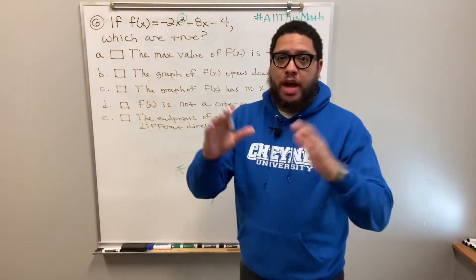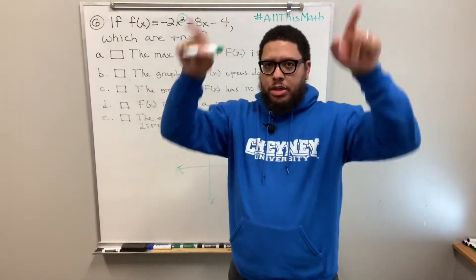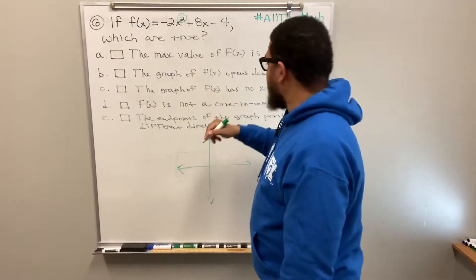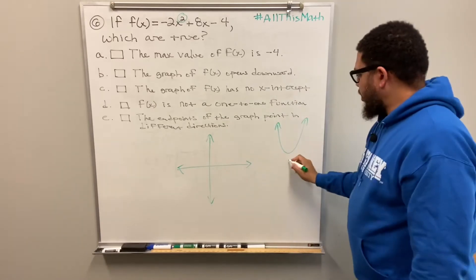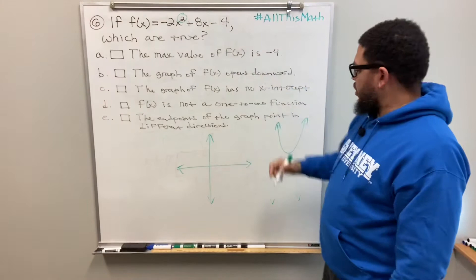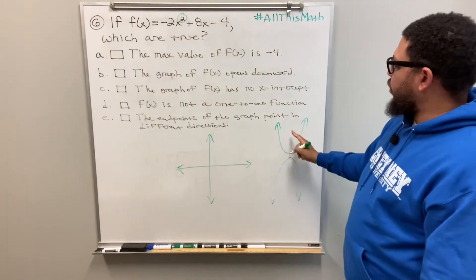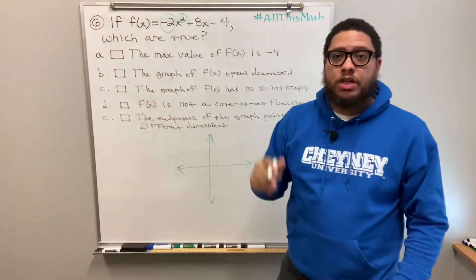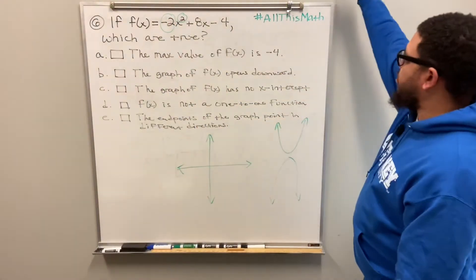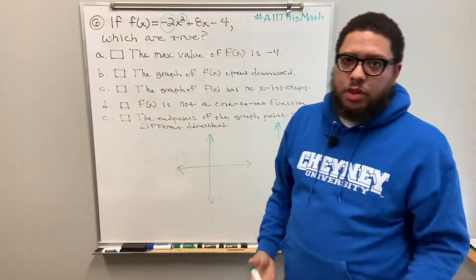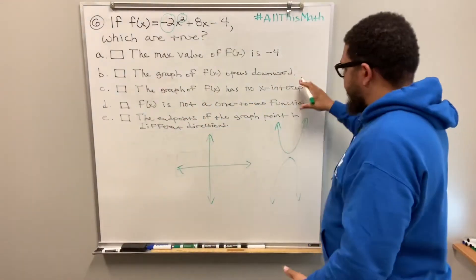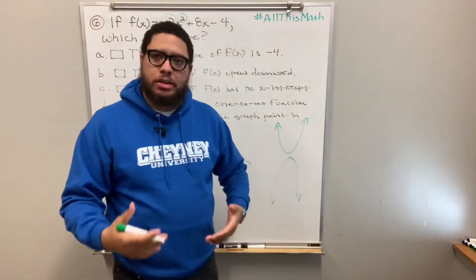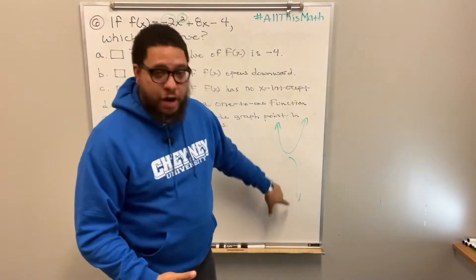Quadratics — the graphs are called parabolas. They either look like a right-side-up U or an upside-down U. This particular parabola is going to look like one of those two. How do I know if it's facing up or facing down? The leading number: if that number is positive, it opens up — think positive, spirits are up. If it's negative, your spirit is down, the graph opens down.